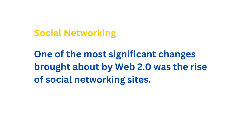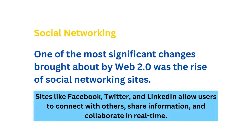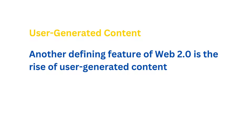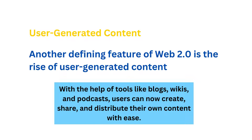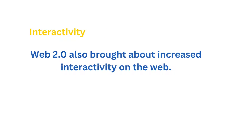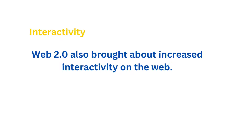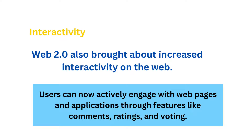Social networking: one of the most significant changes brought about by Web 2.0 was the rise of social networking sites. Sites like Facebook, Twitter, and LinkedIn allow users to connect with others, share information, and collaborate in real-time. User-generated content: another defining feature of Web 2.0 is the rise of user-generated content. With the help of tools like blogs, wikis, and podcasts, users can now create, share, and distribute their own content with ease. Interactivity: Web 2.0 also brought about increased interactivity on the web. Users can now actively engage with web pages and applications through features like comments, ratings, and voting.